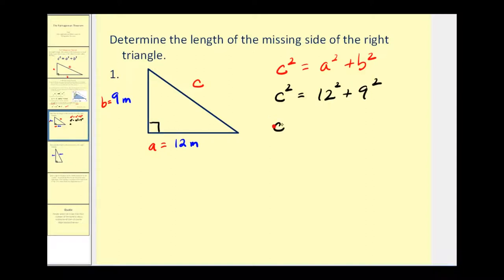So we have C squared equals 12 squared is 144. 9 squared is equal to 81. So we have C squared equals 225.